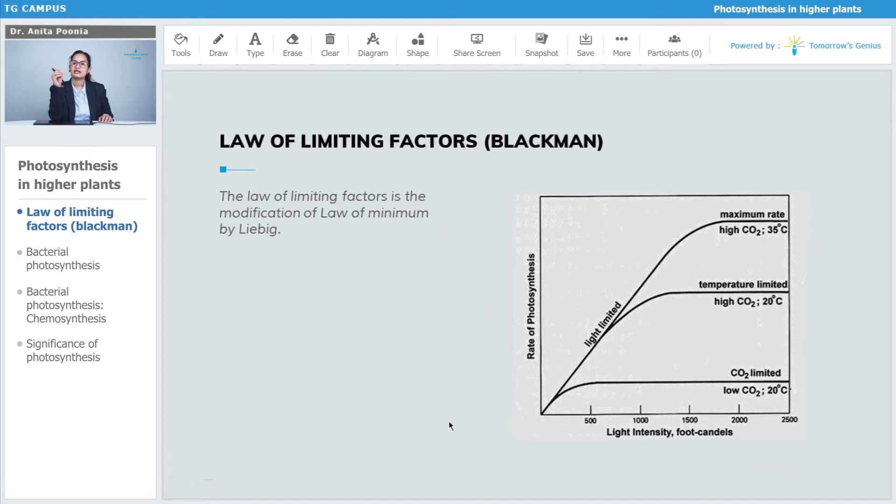We're talking about the Law of Limiting Factors given by Blackman. The law of limiting factors is the modification of the law of minimum by Liebig. Here you see this is the rate of photosynthesis, and this is the light intensity in foot candles.